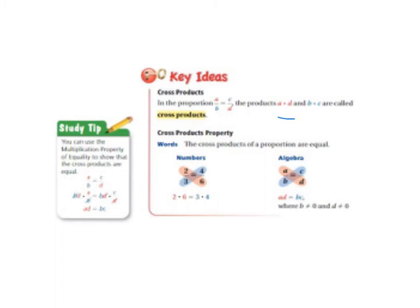The products A times D and B times C are called cross products. So it says the cross products property. The cross products of a proportion are equal. So 2 times 6 equals 3 times 4 because 2 times 6 equals 12 and 3 times 4 equals 12.